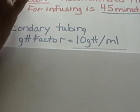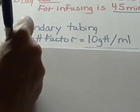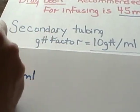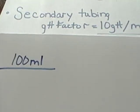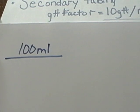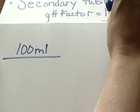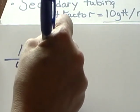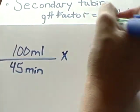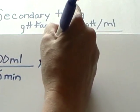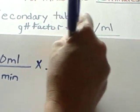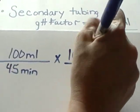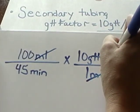We have 100 milliliters as our numerator. That is our volume over 45 minutes, which is our time. Then we say times 10 drops per one milliliter. Our milliliters cancel out.